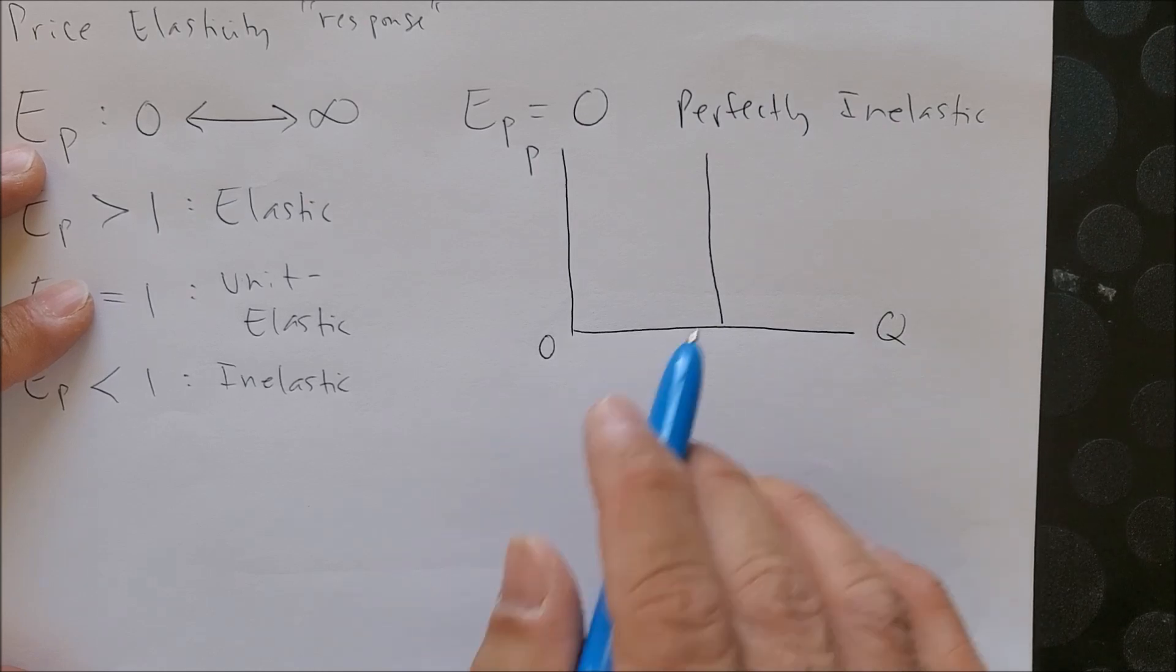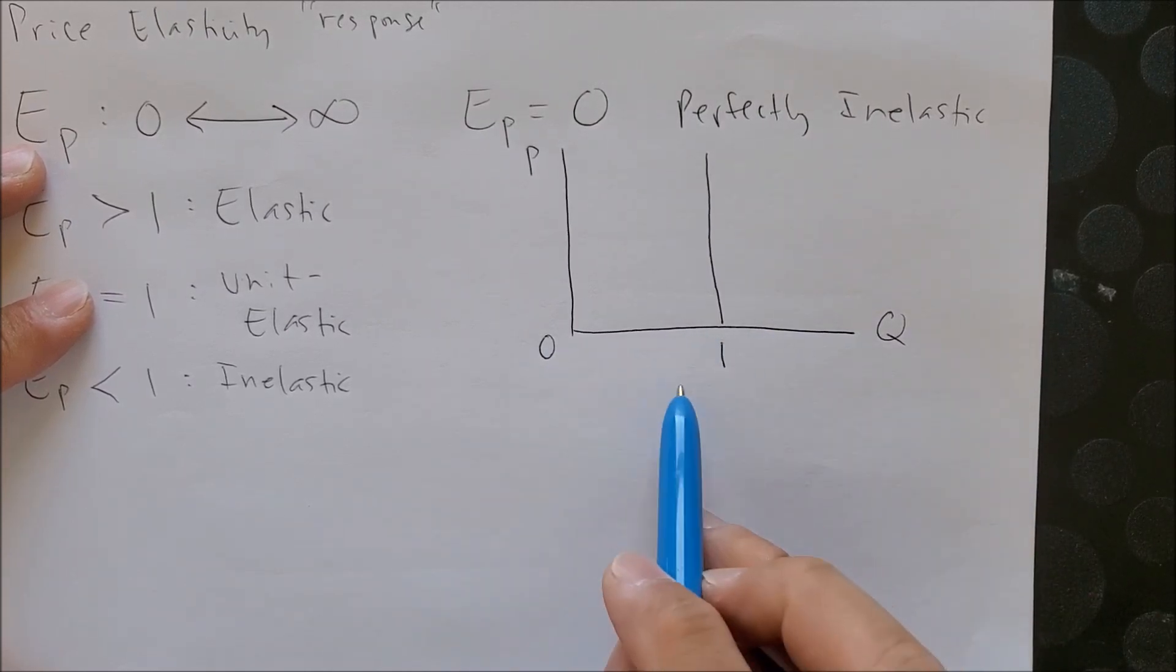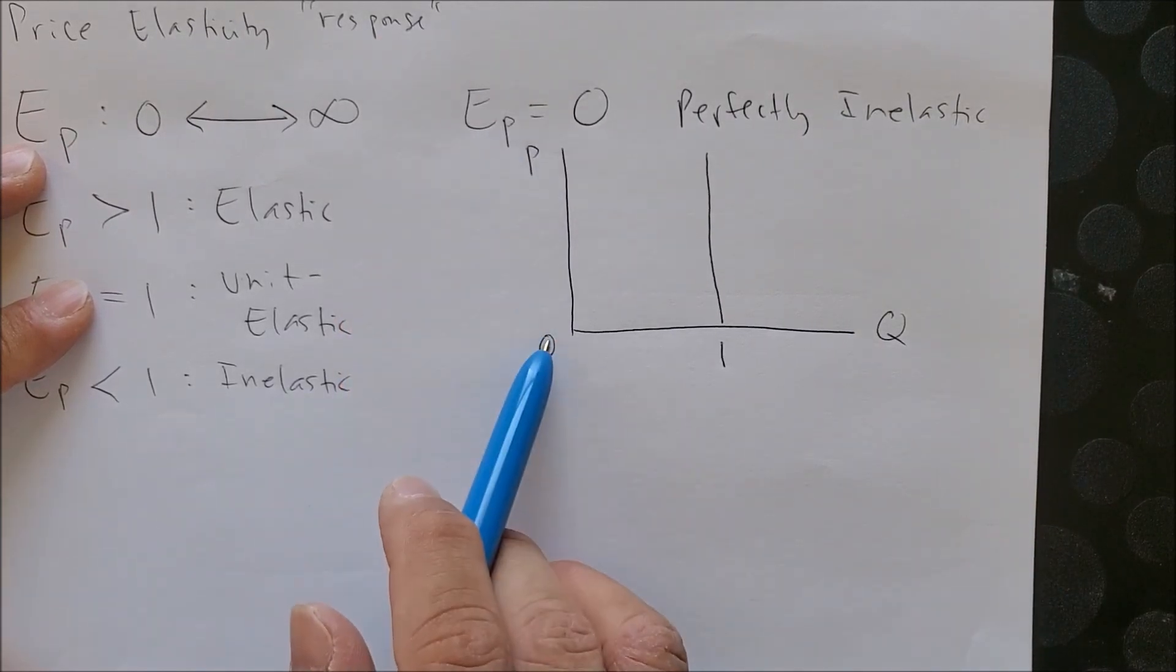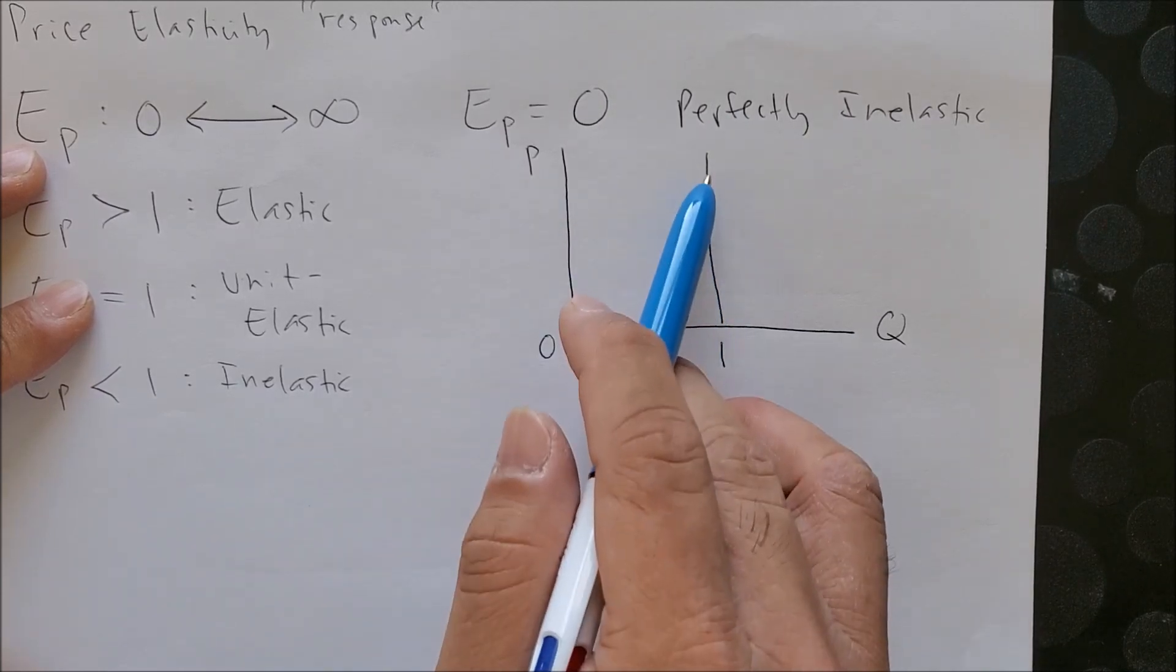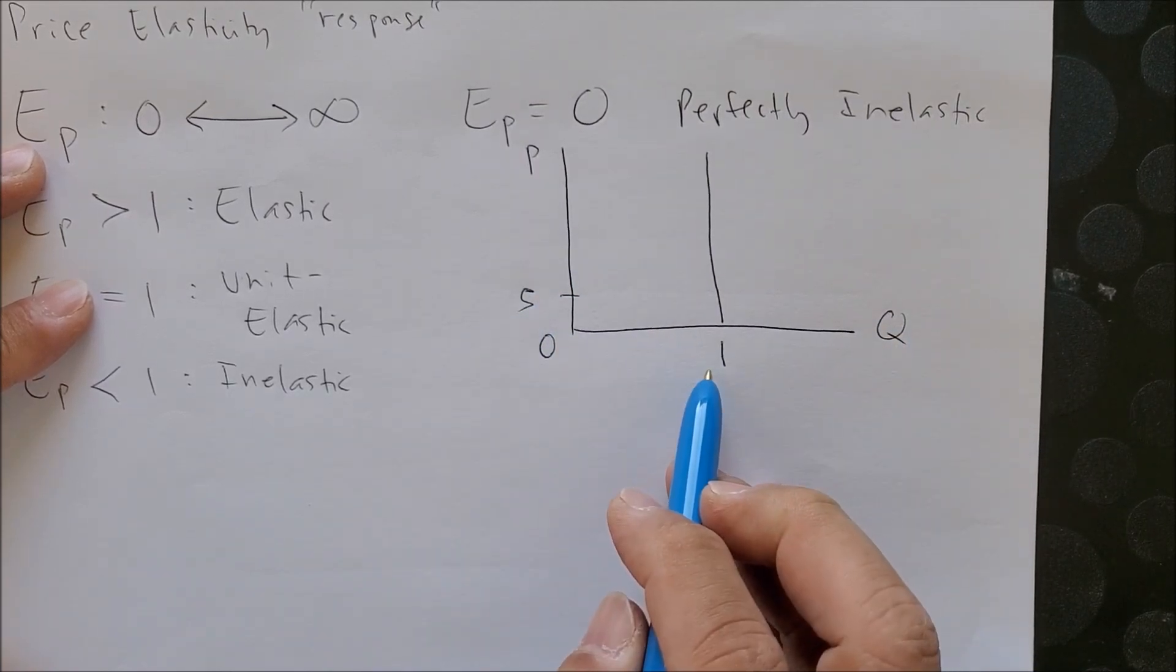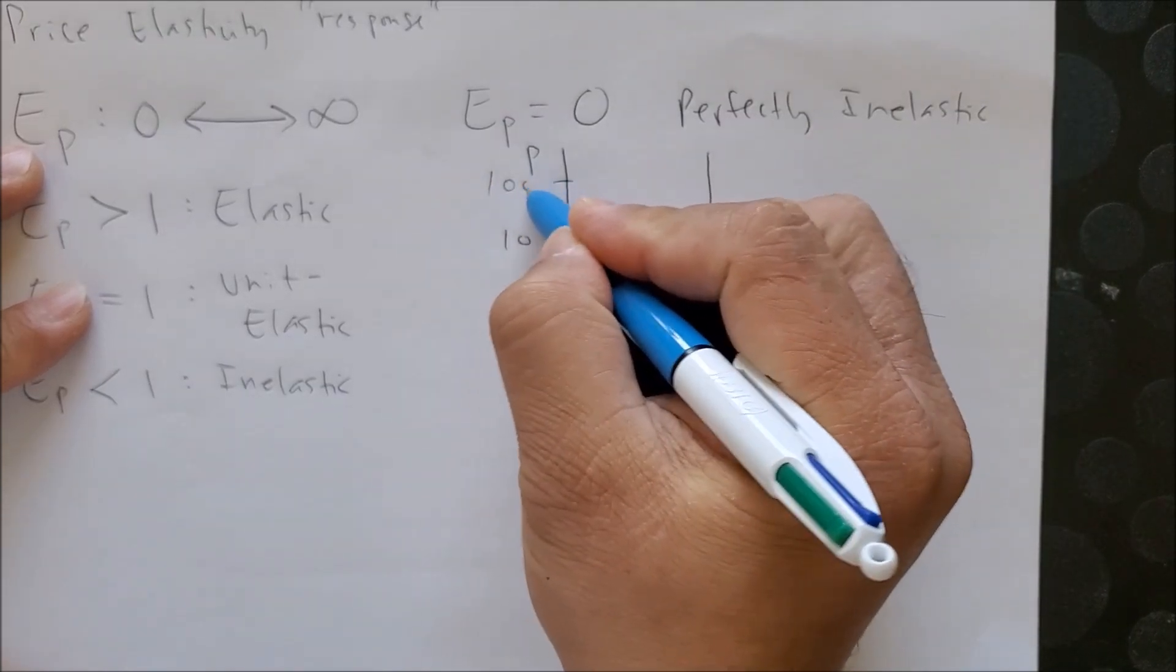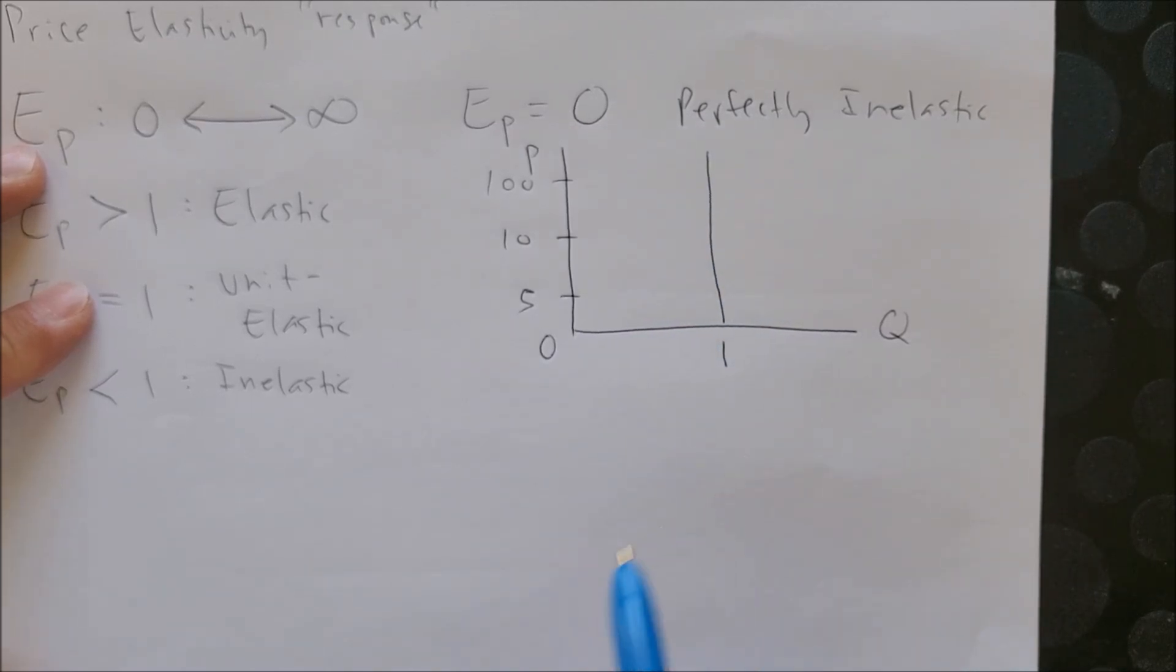Now look at this graph and try to picture what this is trying to imply. Let's put on the x-axis one unit of whatever good you want to think about. Look at the y-axis—this tells us that no matter the price, you are going to consume that good. If the price is five dollars you're going to buy one, if the price is ten dollars you're going to buy one, if the price is a hundred dollars you're going to buy one.